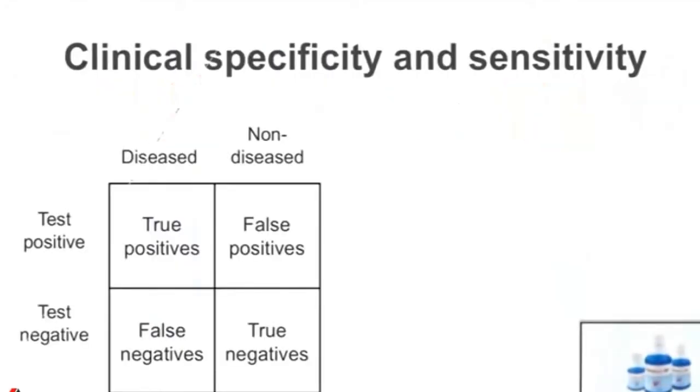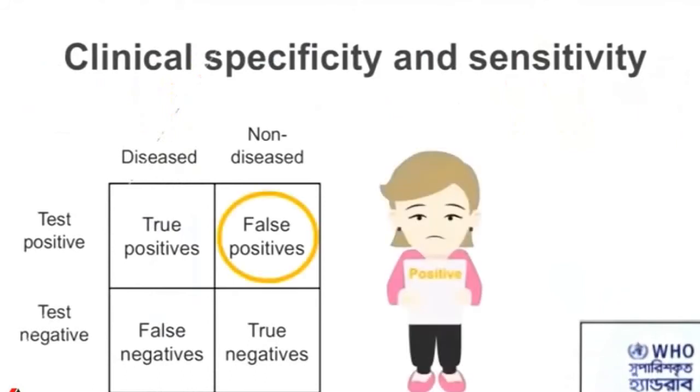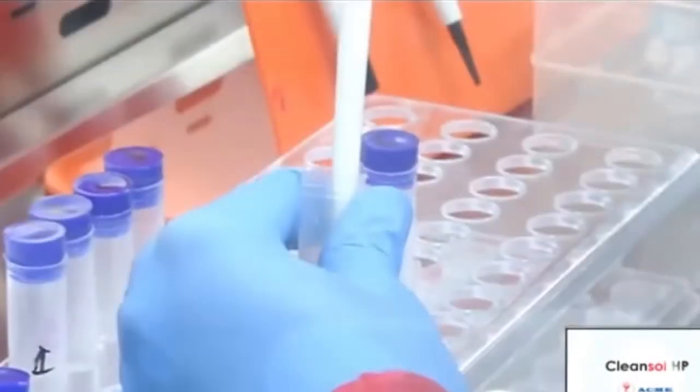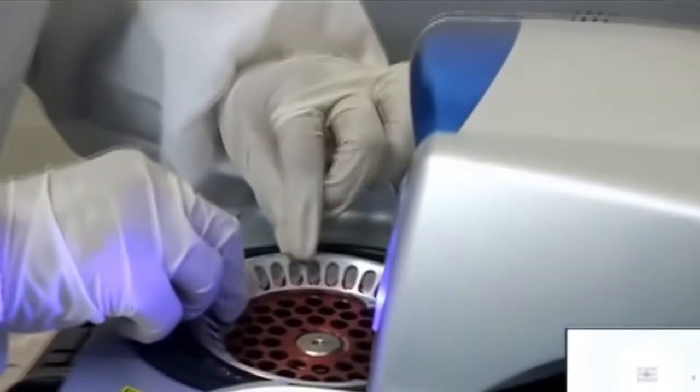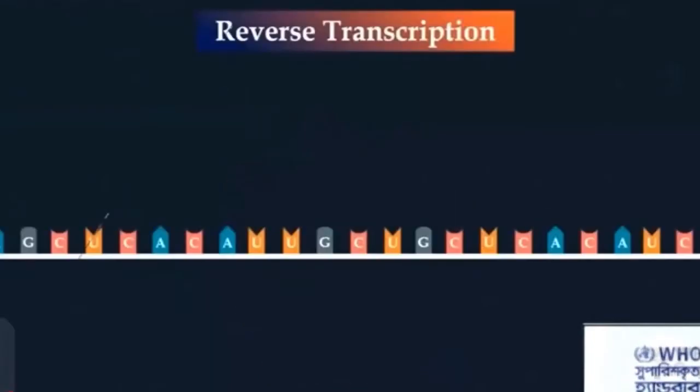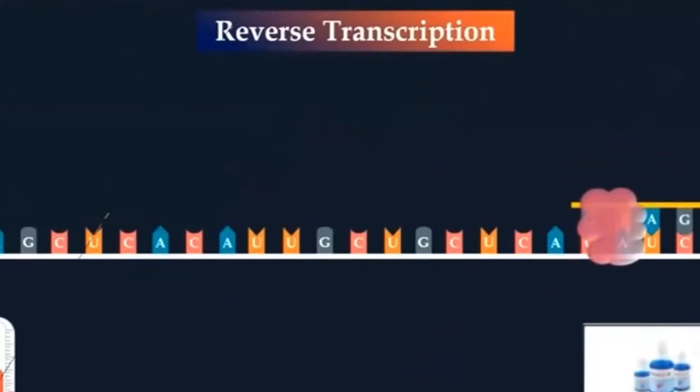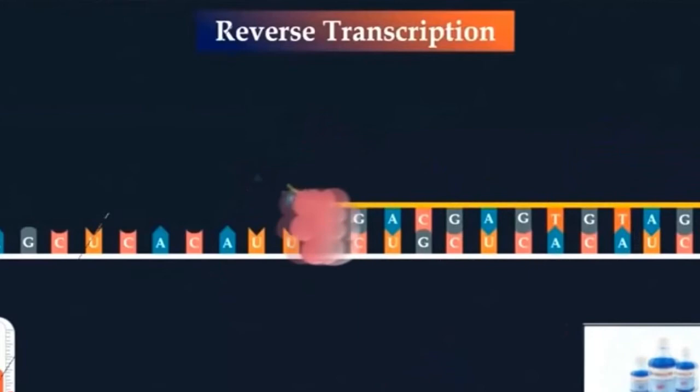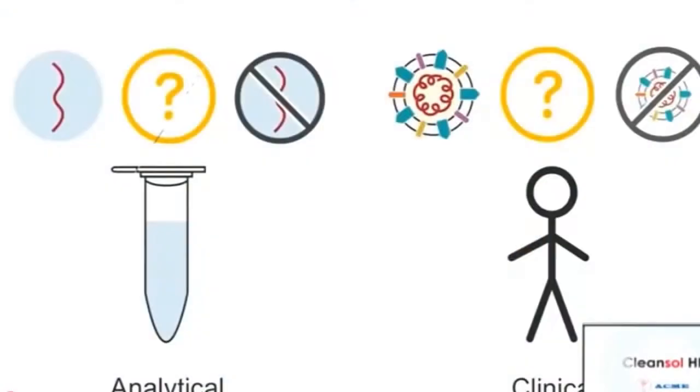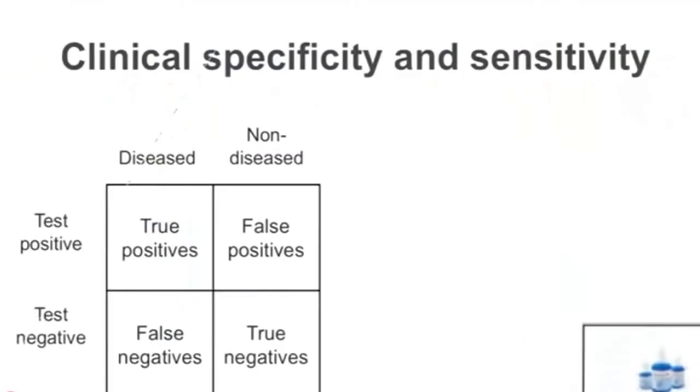Sometimes it gives a negative result when it should be positive. This is called a false negative - meaning it's not actually negative but shows as negative. This can happen due to some technical reasons. RT-PCR can sometimes give wrong results due to these technical factors.